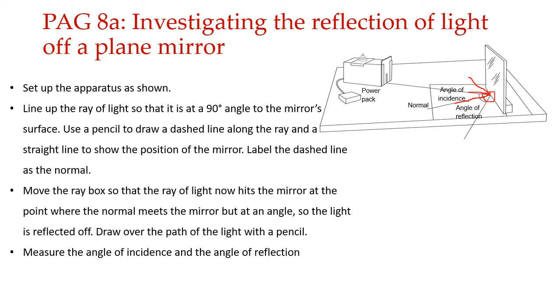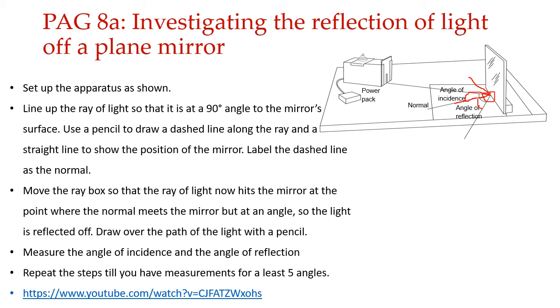You will do this at different positions. For each position of the ray light, you need to measure the angle of incidence and angle of reflection. You will do it for at least five different angles. A common mistake students do is the angle of incidence is the angle between the incident ray and the normal, not between the surface and the normal. So our angle of incidence is this one and our angle of reflection is this one. Once you have drawn everything with pencils, you can measure using a protractor. I have added a link to it so that you can see the demo.